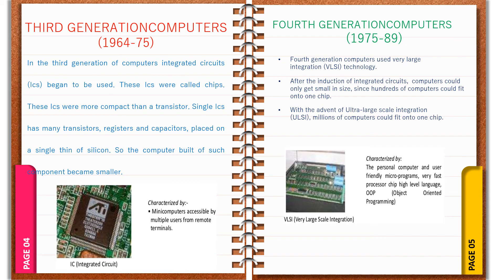Advantages of fourth generation computers include: more powerful and reliable than previous generations, small in size, very low cost of operation, negligible heat generation, fast processing with lesser power consumption, no air conditioning required, less need of repair, all types of high level languages can be used, and they were the cheapest among all generations. Disadvantages include: highly sophisticated technology was required for the manufacture of LSI chips, and they had less storage capacity needing further improvement.